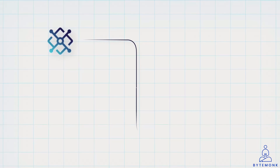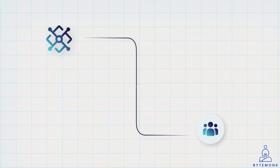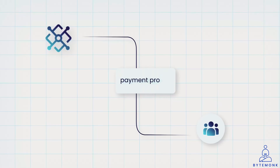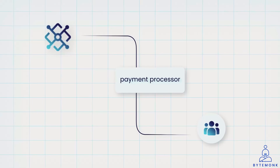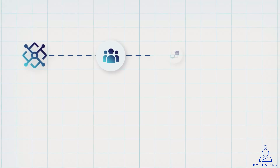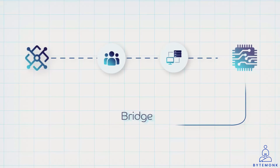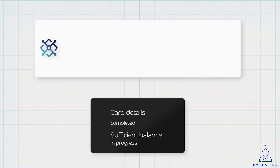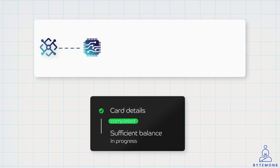Note that the payment gateway itself does not directly check the availability of funds in the customer's bank account. That specific fund availability check is carried out by the payment processor during the authorization process. The payment gateway primarily handles the transmission of payment data between the customer, the merchant, and the payment processor — it acts as a bridge for data. Once the payment gateway has verified the card details, it forwards the transaction to the payment processor.